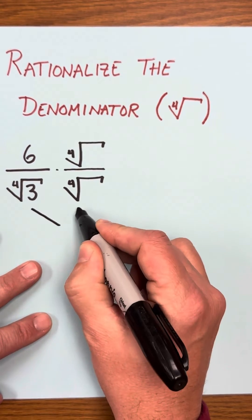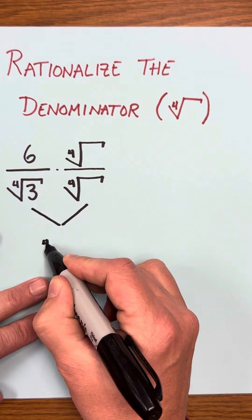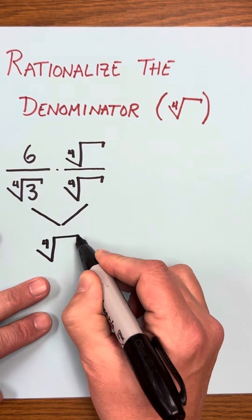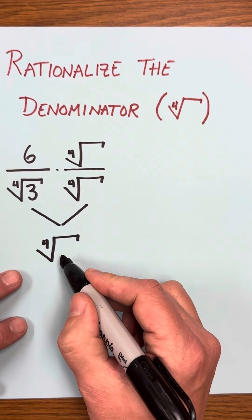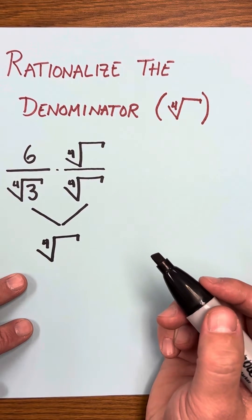And we need to pick a number such that when we multiply these two fourth roots in the denominator, we get a number that we can take the fourth root of. So you need to know some fourth powers.